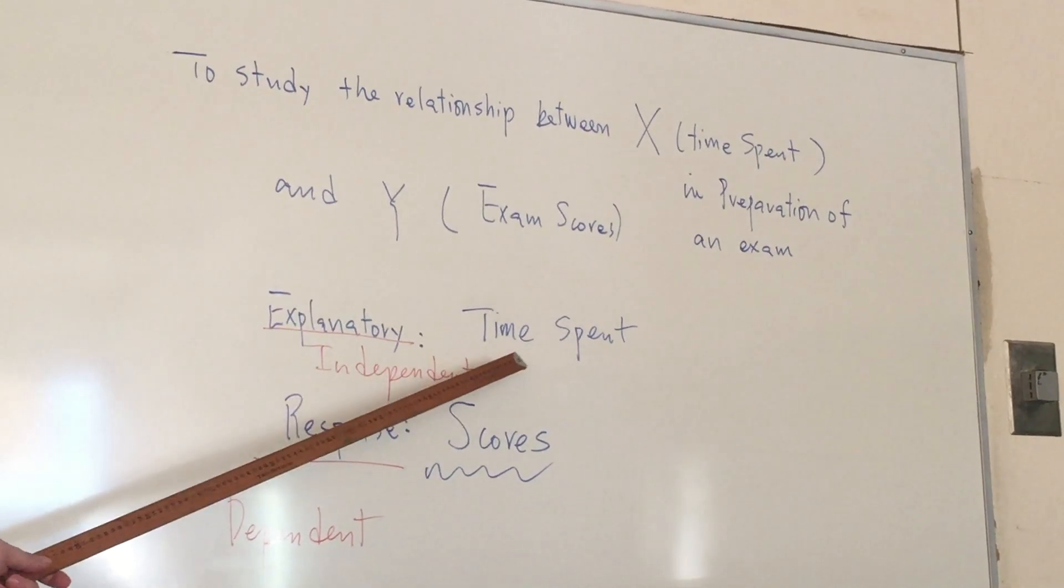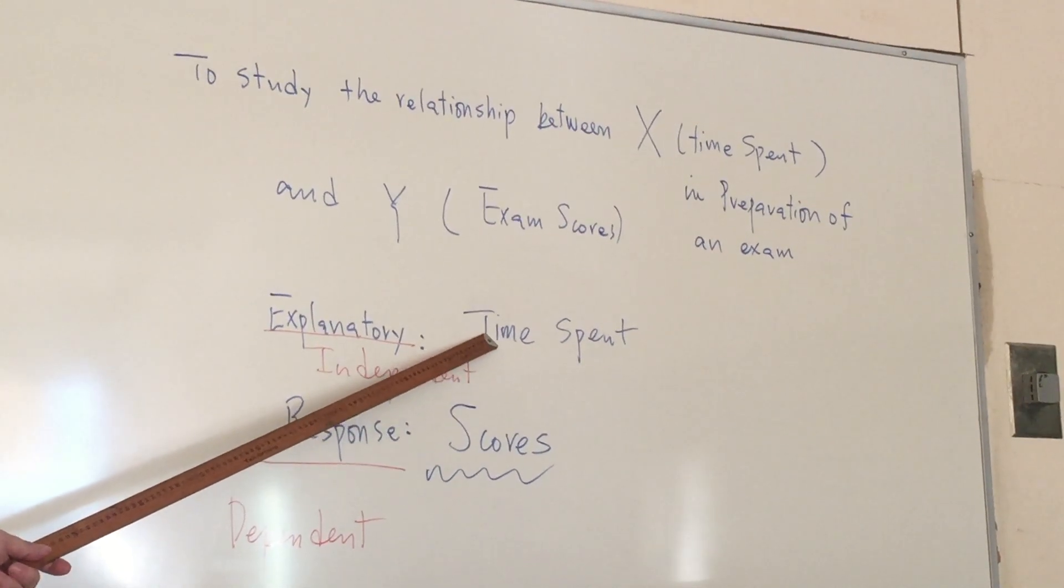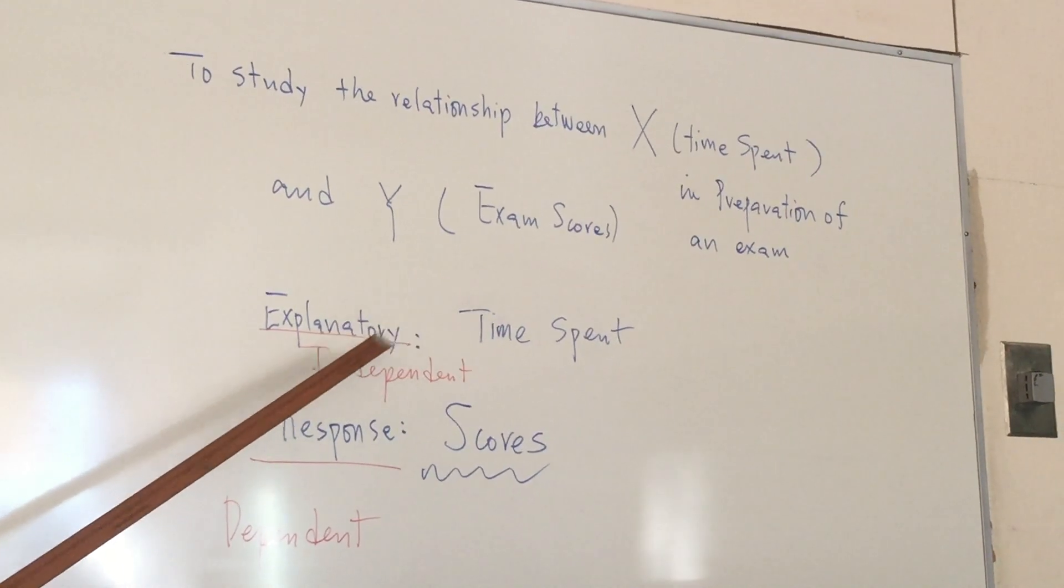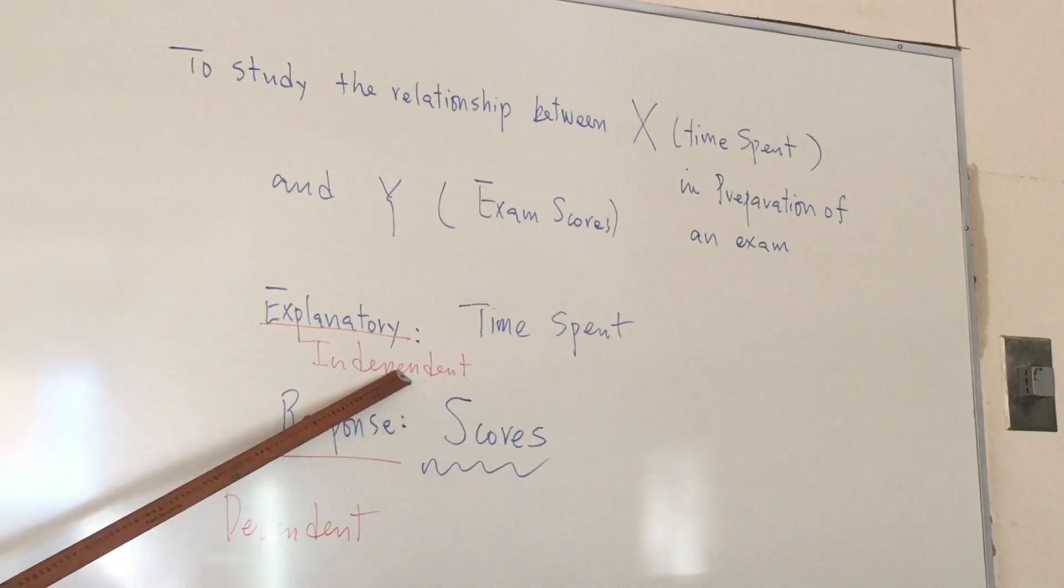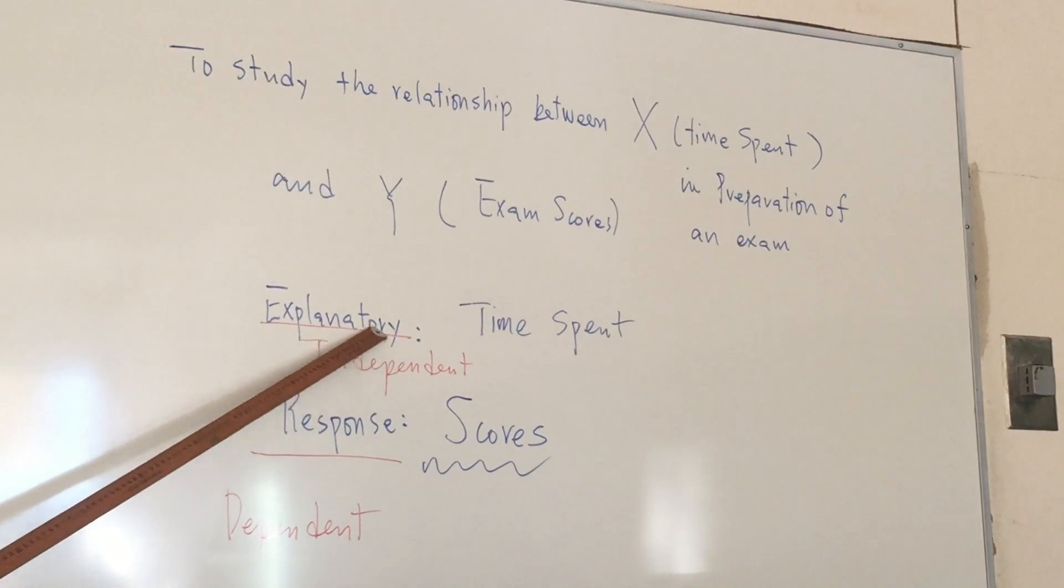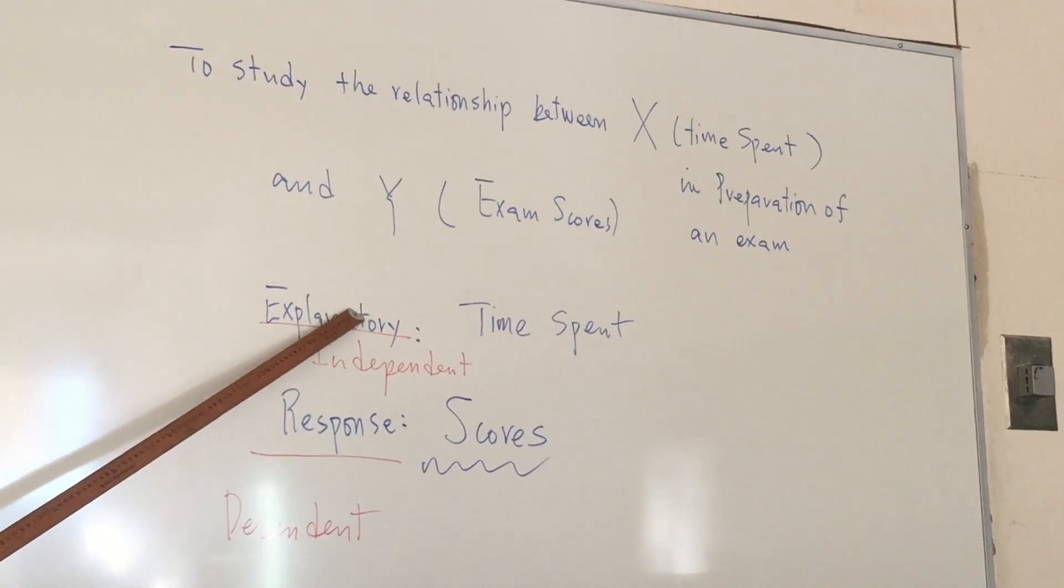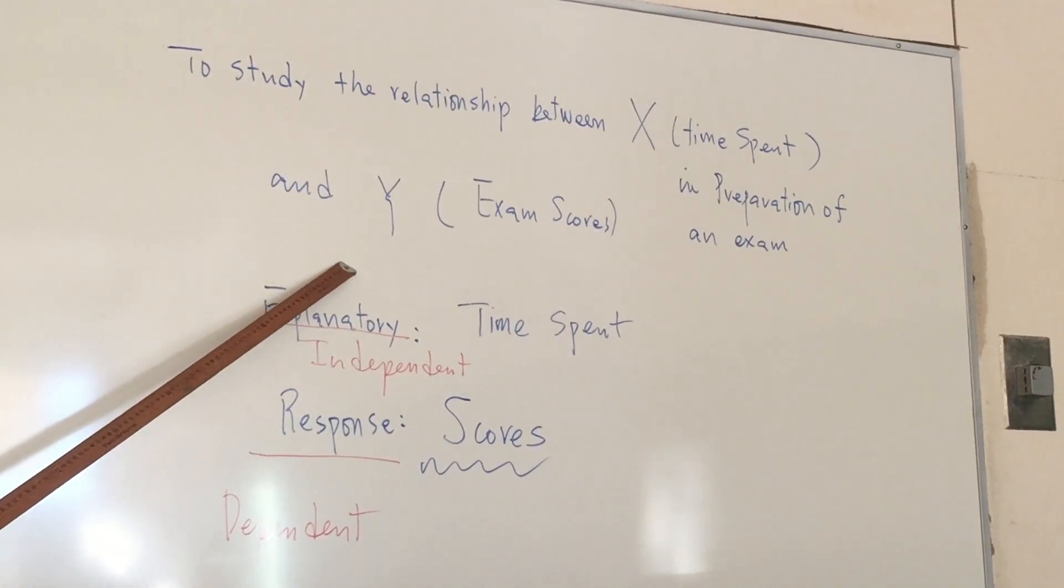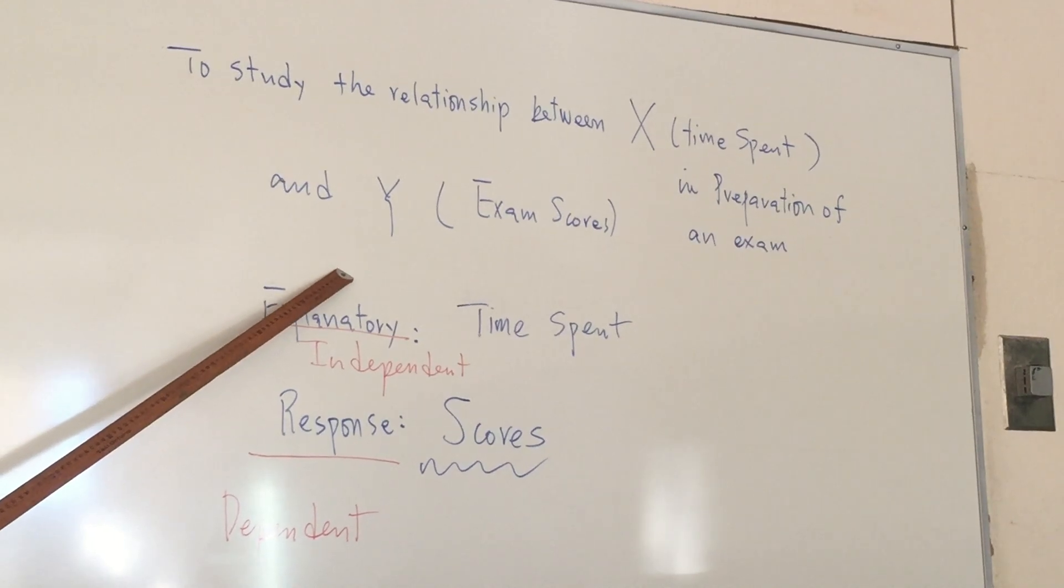In our example, time spent in preparation is the explanatory variable, or independent variable. Why did John get an A? Because John spent 200 hours before the test.